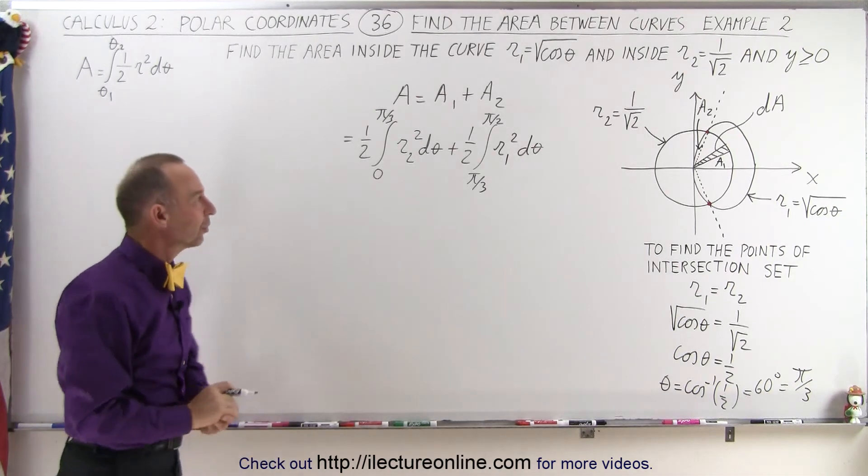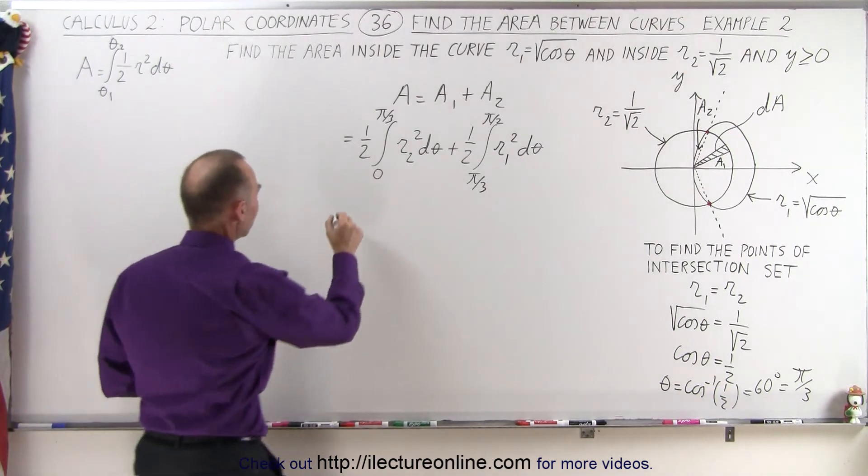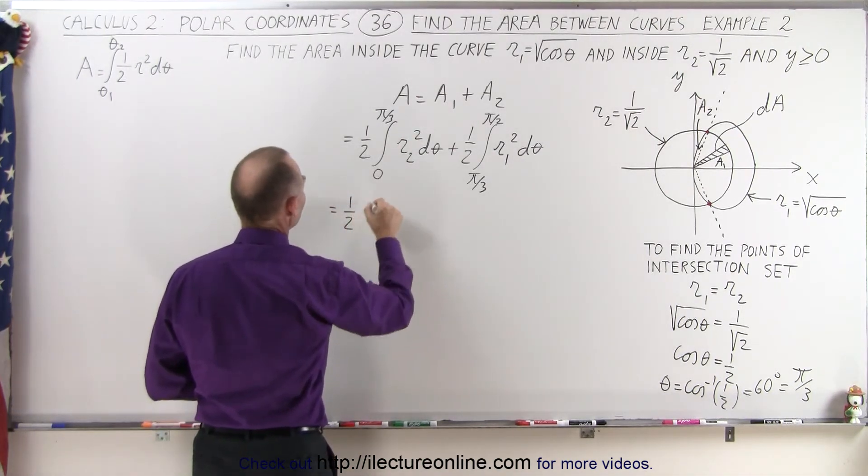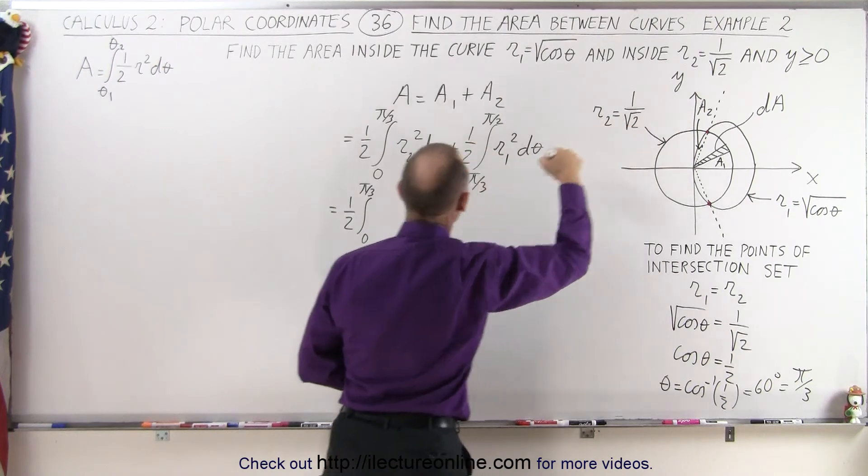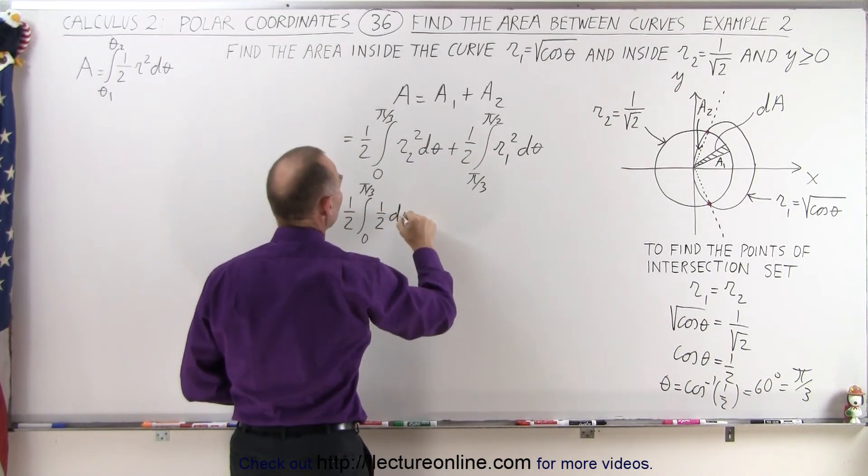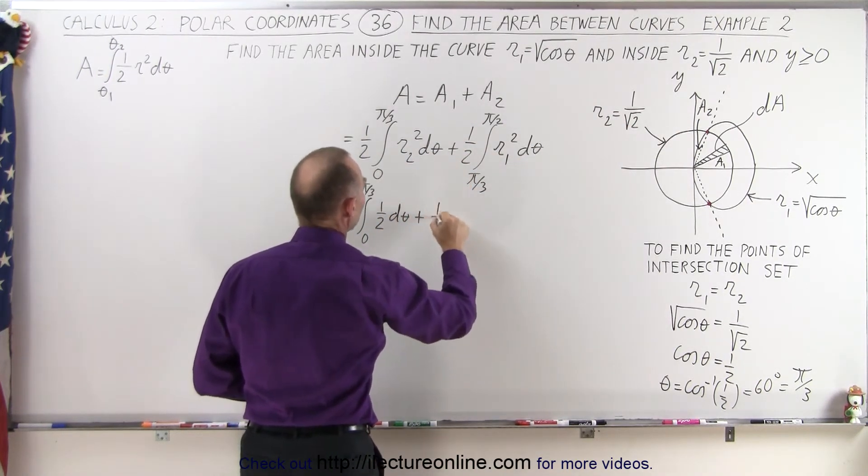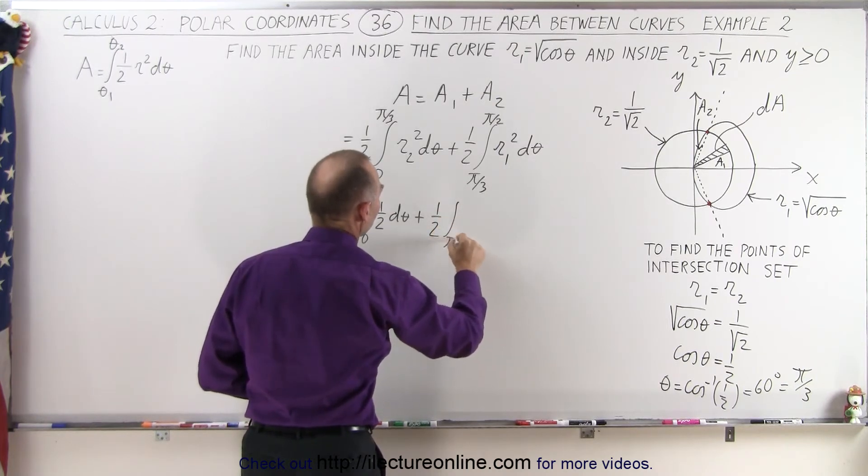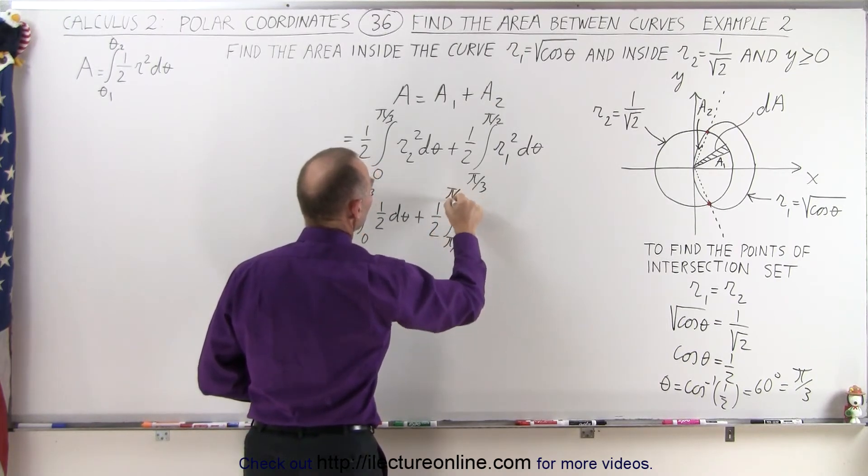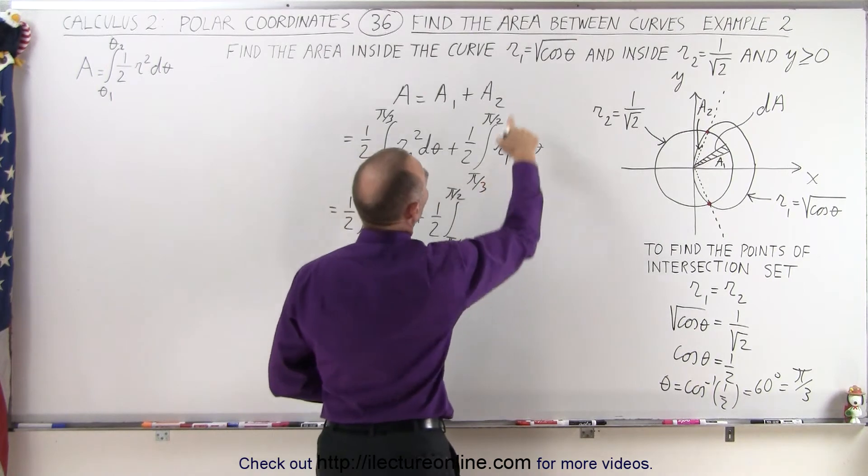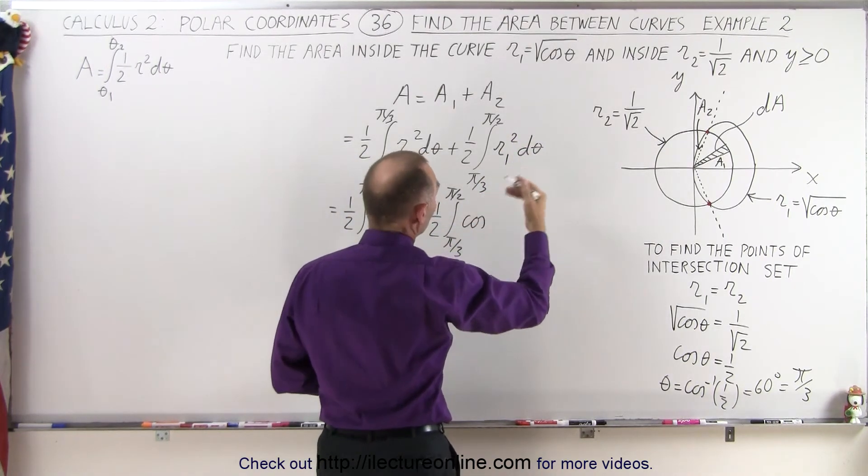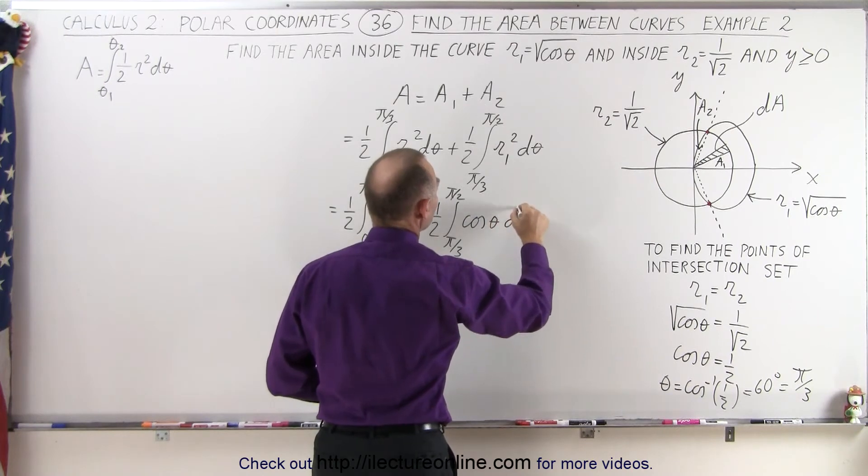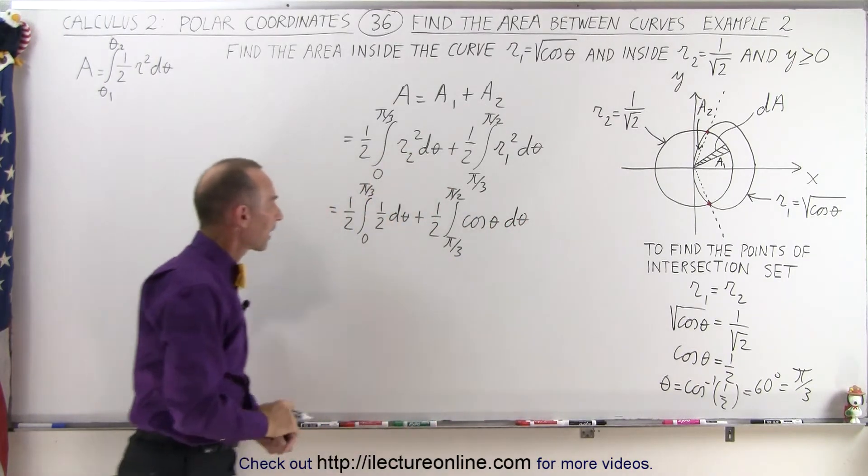And now we're ready to solve this problem. So this is equal to 1 half times the integral from 0 to pi over 3. So basically R2, which is 1 over the square root 2 squared, which is 1 half times d theta, plus 1 half times the integral from pi over 3 to pi over 2. R1 squared will be cosine theta squared, or the square root of that squared, which is simply cosine of theta d theta.